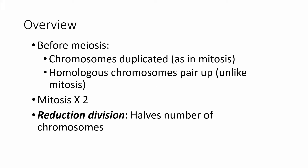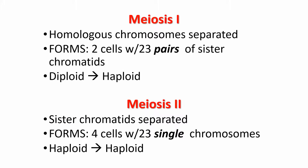Let's go through the process of meiosis. As in mitosis, you duplicate your chromosomes, but what's different is instead of lining up your chromosomes at the center of the cell, you pair up homologous chromosomes. Meiosis is like mitosis times two — we call it a reduction division because it reduces or halves the number of chromosomes. In the first division you separate homologous chromosomes; in the second division you separate sister chromatids. The actual transition from diploid to haploid happens during the first division.